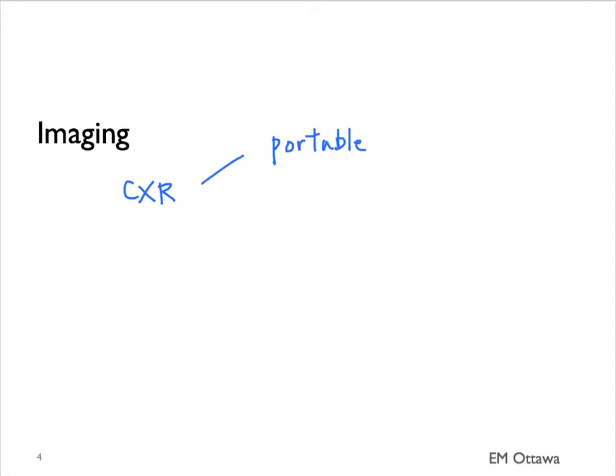The imaging of choice here is a chest x-ray. If the patient is too sick to leave the department, we can just start with a portable chest x-ray. If they're well enough to leave, then we do two views of the chest. Let's look at what an x-ray would look like in a patient with pneumonia.